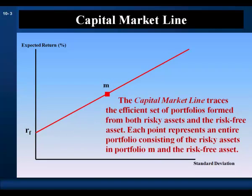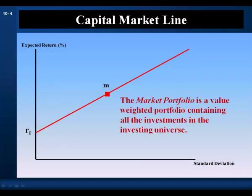This new efficient frontier is called the capital market line. The capital market line traces the efficient set of portfolios formed from both risky assets and the risk-free asset. Each point represents an entire portfolio consisting of the risky assets in portfolio M and the risk-free asset. What is portfolio M? Assuming homogeneous expectations — where all investors have the same beliefs concerning returns, variances, and covariances — all investors will naturally hold the same portfolio M, and that portfolio is the market portfolio. The market portfolio is a value-weighted portfolio containing all investments in the investing universe: stocks, bonds, mortgages, collectibles, even investments in human capital such as college degrees.